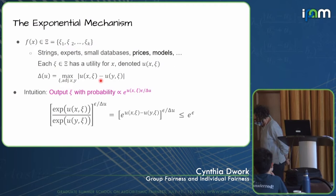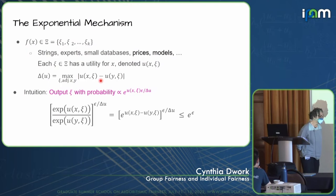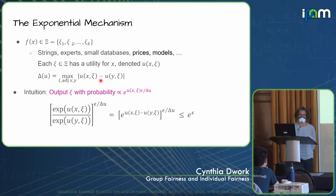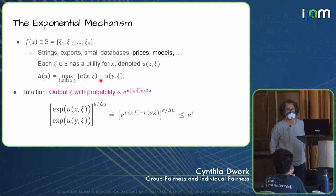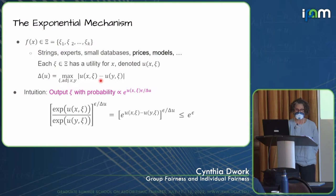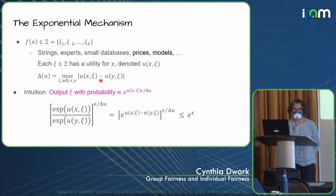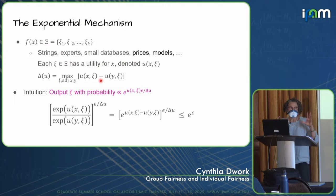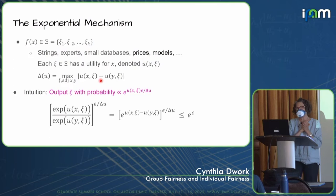The exponential mechanism has the following form. Suppose the goal is to choose an element that is particularly appropriate from a discrete set. For example, the algorithm might output a histogram, or try to reveal the most popular search queries — the heavy hitters — or create a synthetic data set that approximately captures the statistics of the true data set, or produce a price for an auction. These are discrete possible outputs.